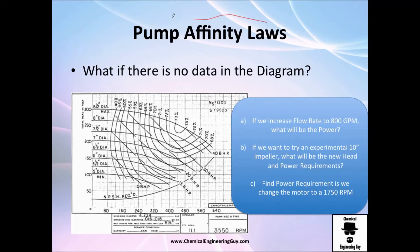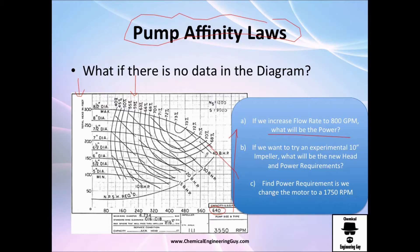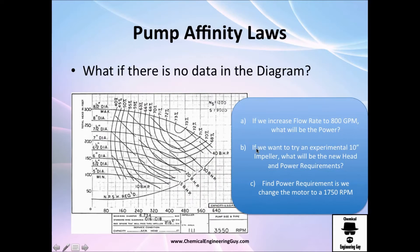Pump affinity laws — this is the last topic in this section. Imagine there is no data in this diagram we've been working with. If we increase the flow rate to 800 gallons per minute, what will be the power? I only have data up to 640, so 800 is beyond that range. That's not normal operation of the pump, but imagine you only have that pump, or imagine we want to try an experimental 10-inch diameter impeller.